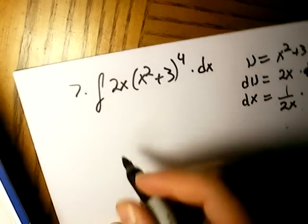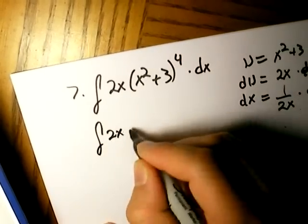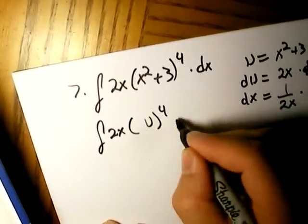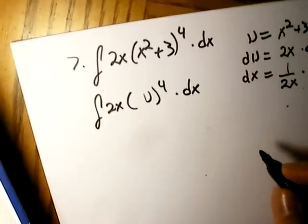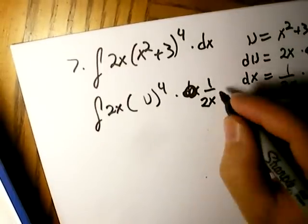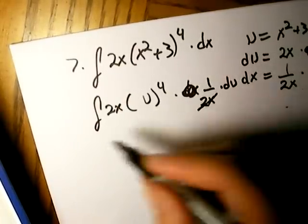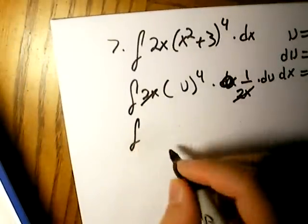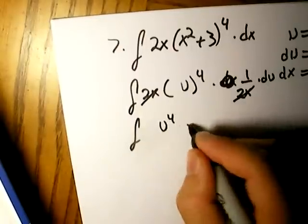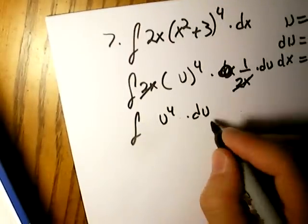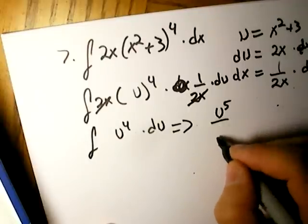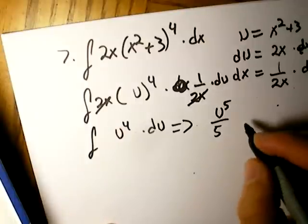Remember, we substitute the dx's into each other. So it's going to end up being 2x times u to the fourth times dx times 1 over 2x times du. Whoops. Times that, because remember we're substituting in times du. The 2x's, guess what? They cancel out. So then you just have the integral of u to the fourth times du, which means the integral of that is going to be u to the fifth over 5 plus c.